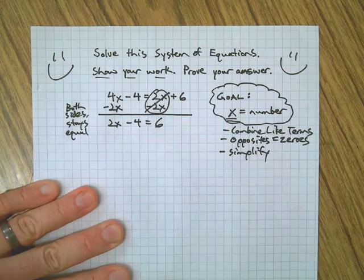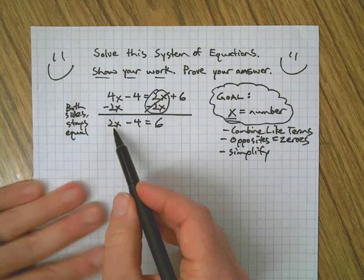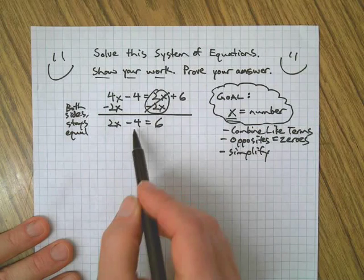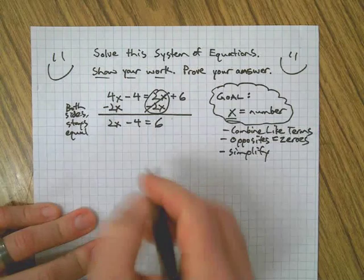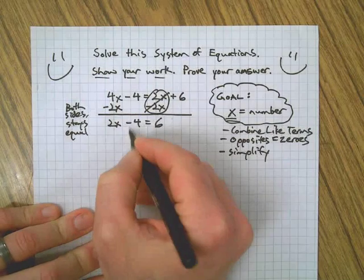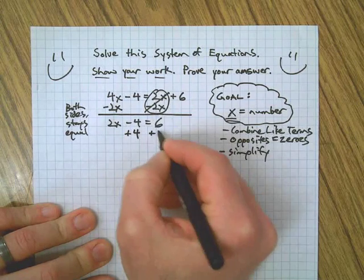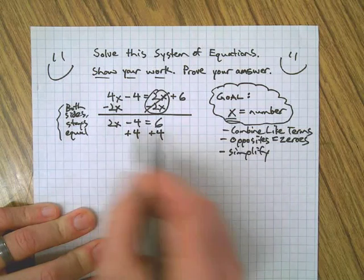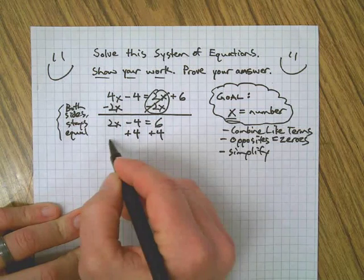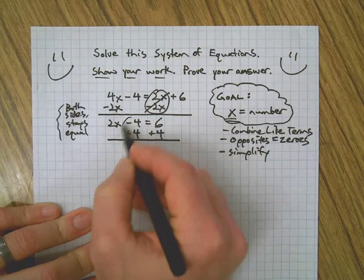We're closer to the goal but we're not there yet. Next step: since I have the X's on the left side, I need to get this 4 out of here. I need to get all the numbers on the right side, so I'm going to take the opposite of negative 4, which is positive 4, both sides, because we want to keep them equal. 4 equals 4, this equals that, so everything stays equal and everybody's happy.